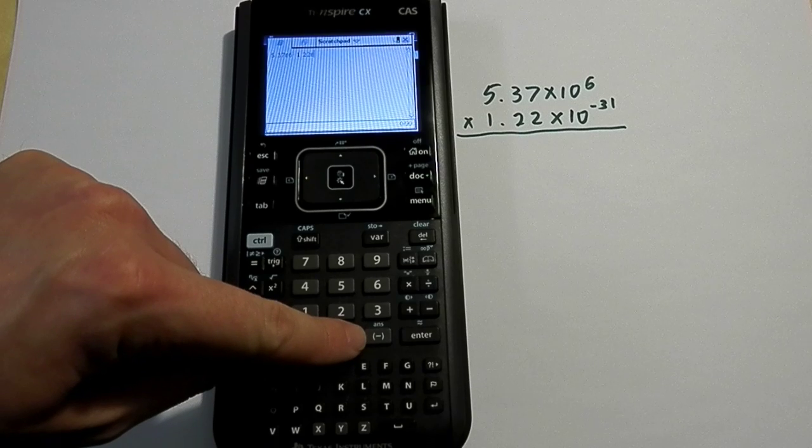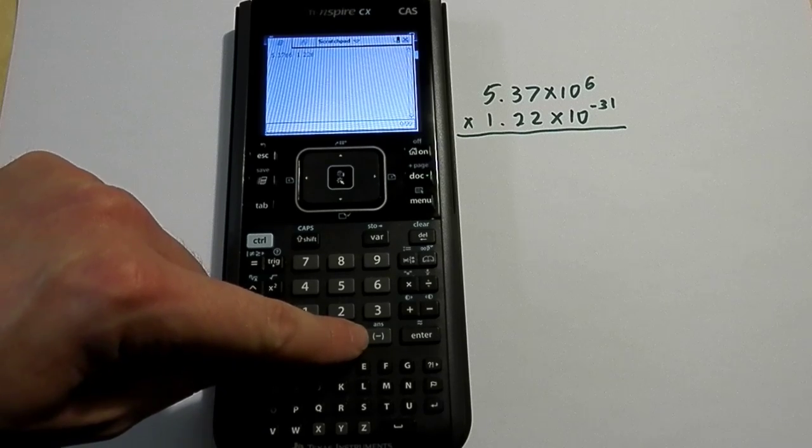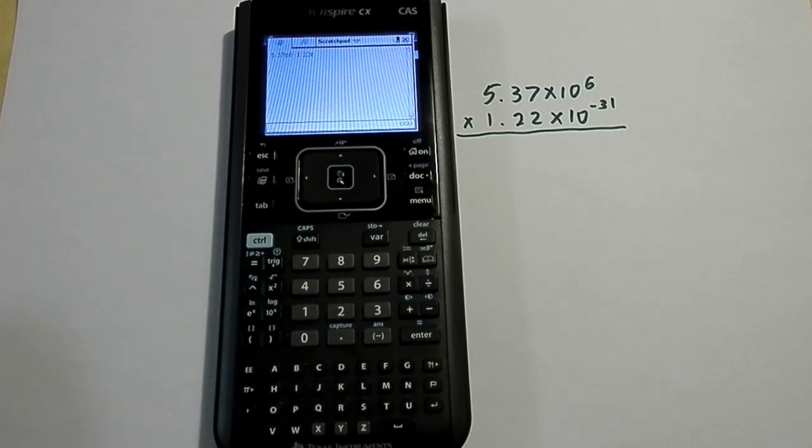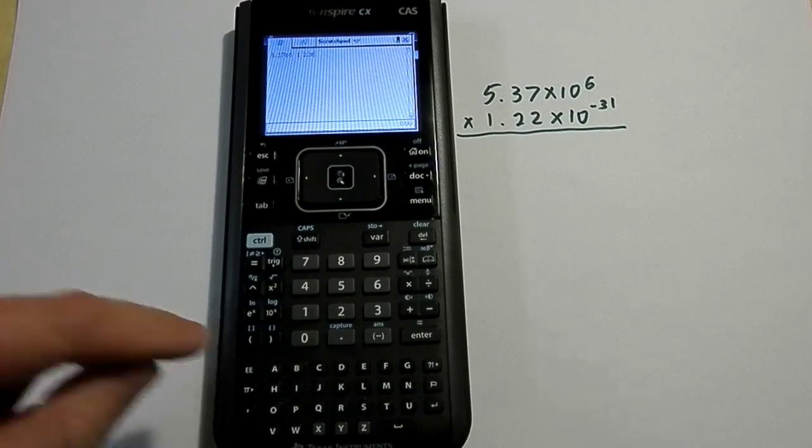So instead, I should be using this button right here that has a negative sign in brackets. That's what tells the calculator that I'm entering in a negative value, not that I want to do subtraction.